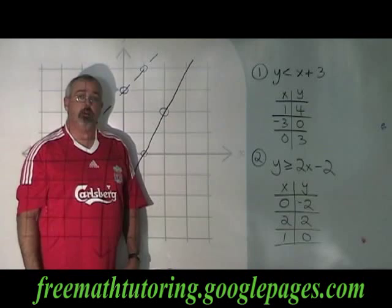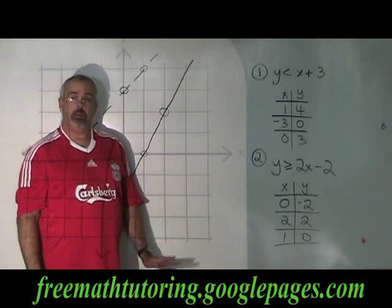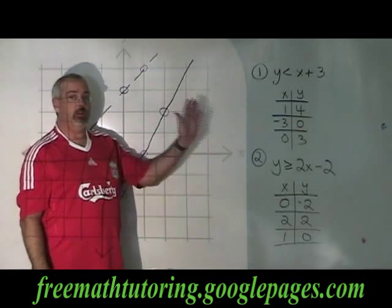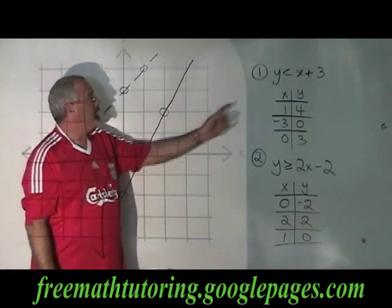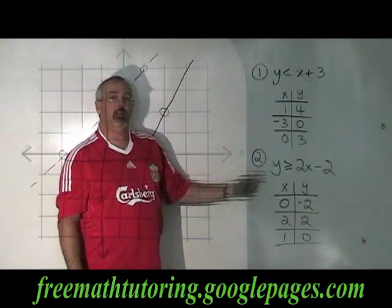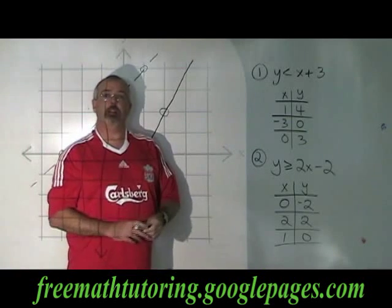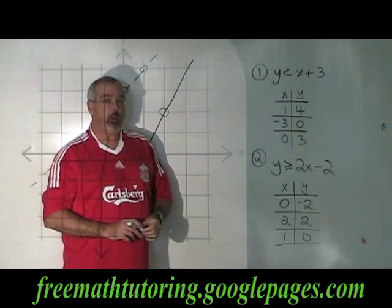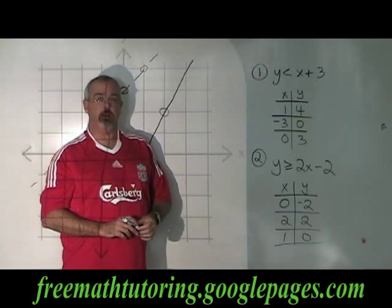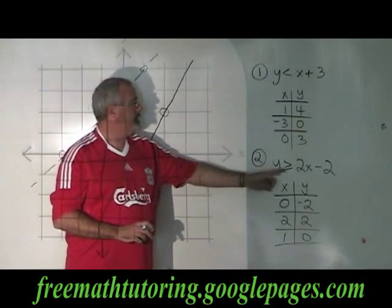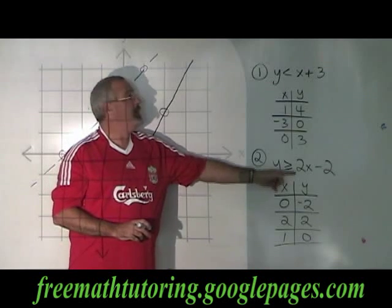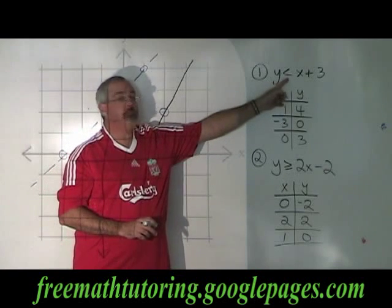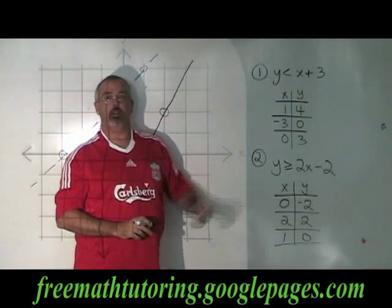It's a simple trick when graphing an inequality. Before you draw your line, pause and look at the symbol. If it has the little extra 'or equal to' line underneath the symbol, it's a solid line. If it doesn't, it's a dotted line.